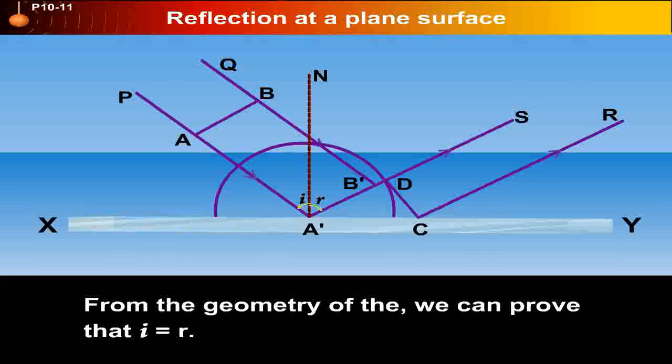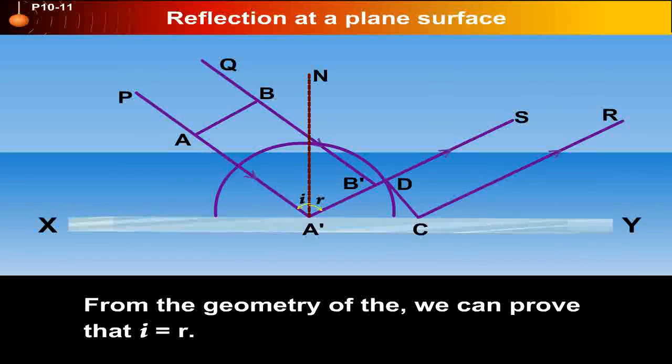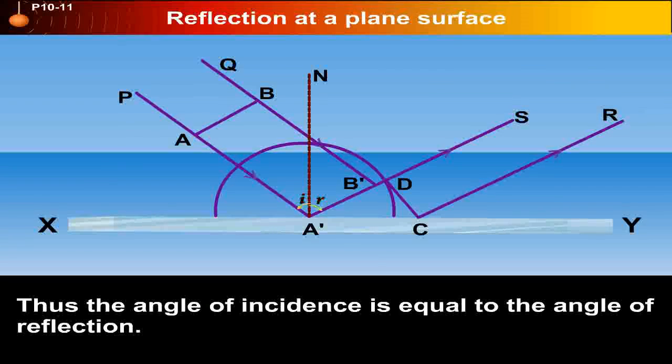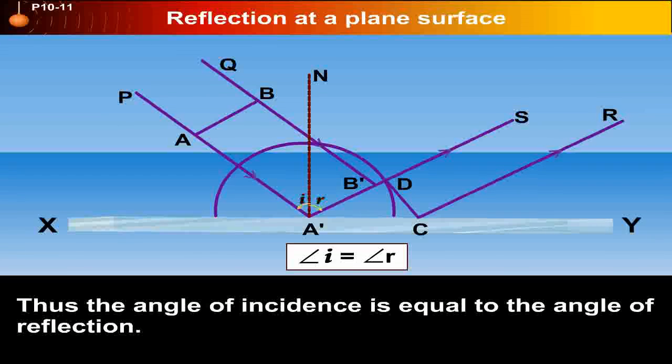From the geometry of this figure, we can prove that i is equal to r. Thus, the angle of incidence is equal to the angle of reflection.